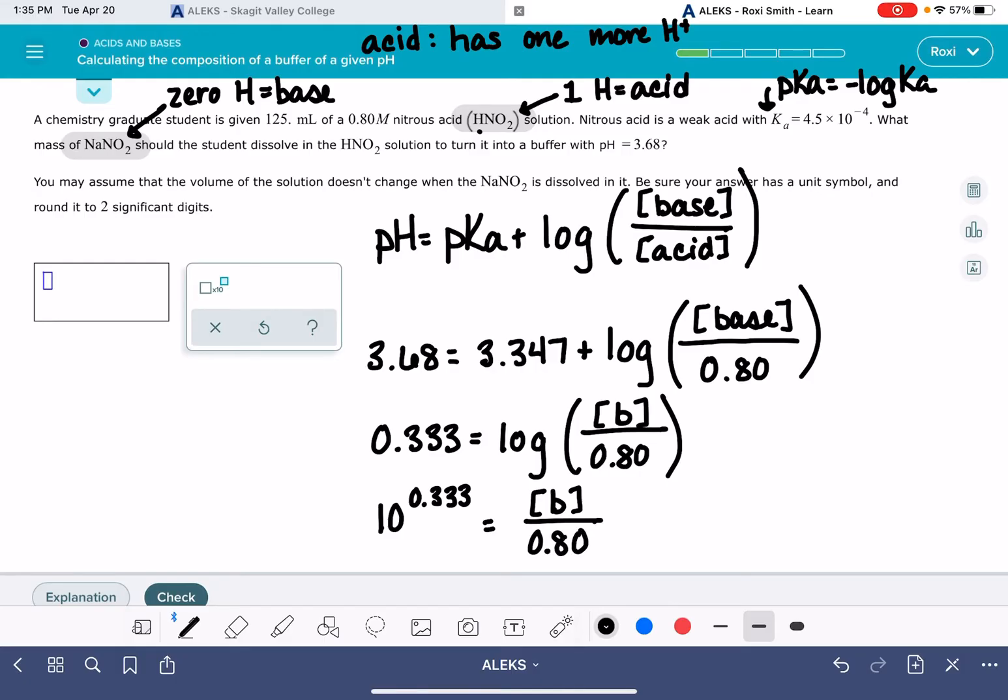And now we can solve for the concentration of the base. 10 to the 0.333 times 0.8. 1.722.